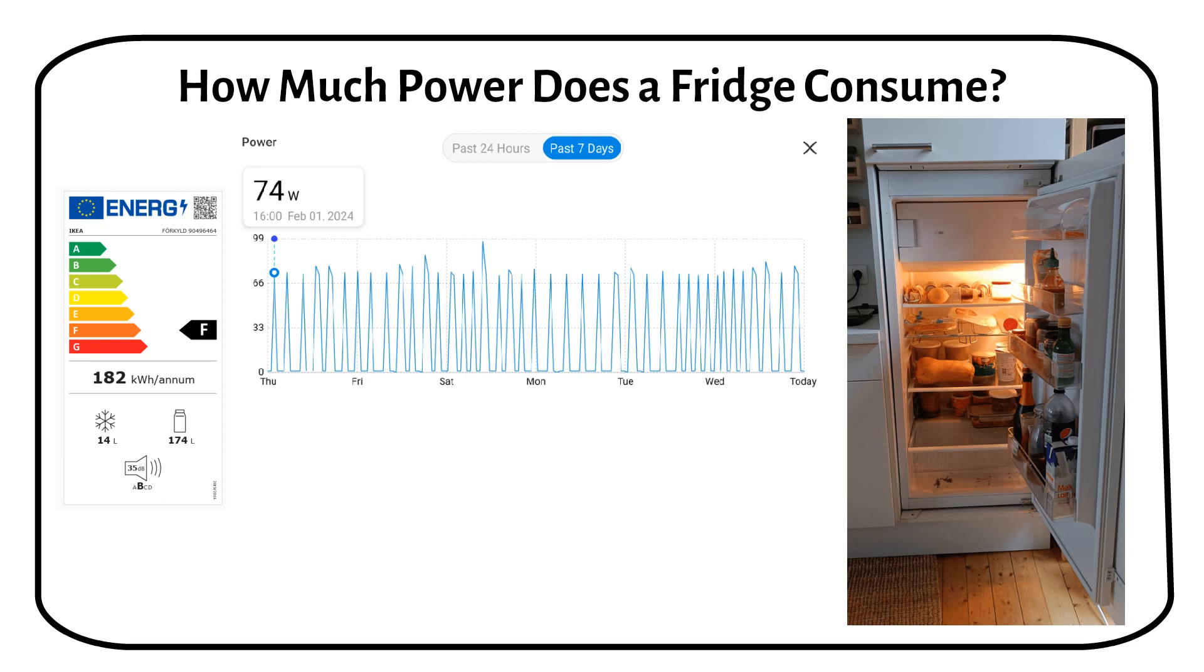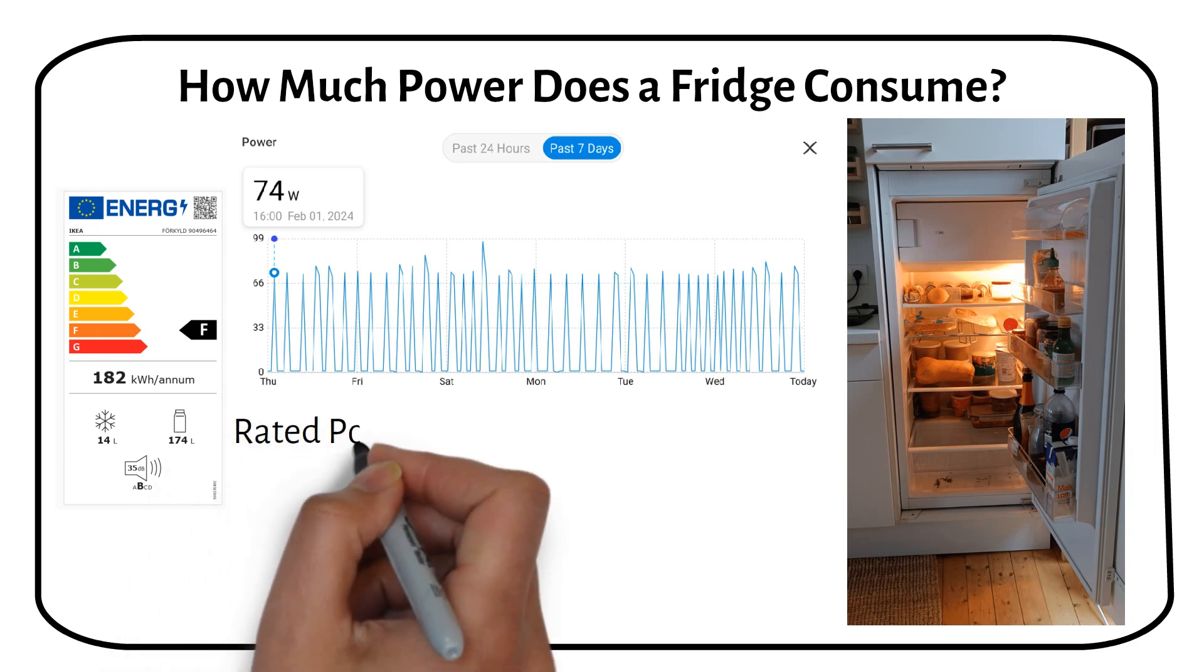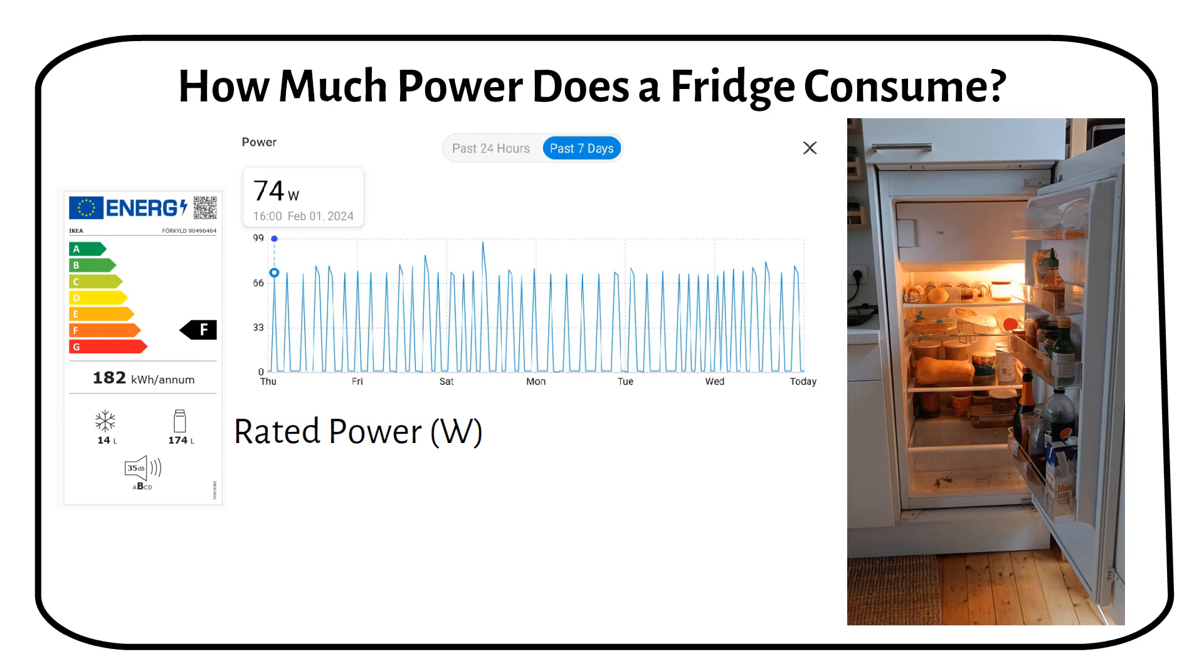Before diving into the details, let's get familiar with a few key terms to help us understand how much power a fridge consumes. First stop is rated power. This figure, measured in watts, tells us how much power your fridge uses when running. You can usually find this number on a sticker inside or outside your fridge. My fridge has a rated power of 75 watts, and we will use this information to figure out its daily energy usage.